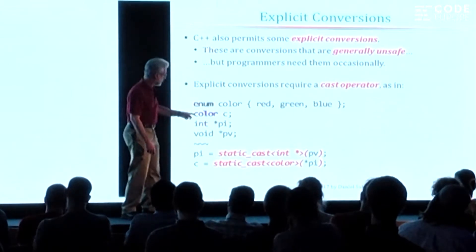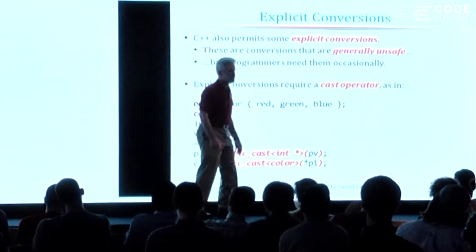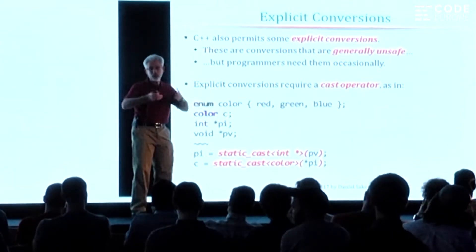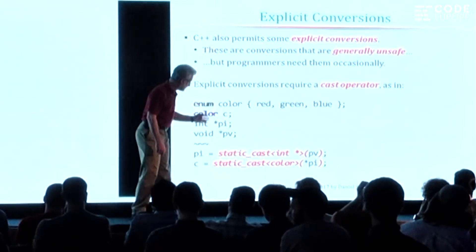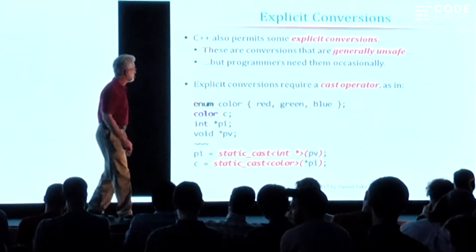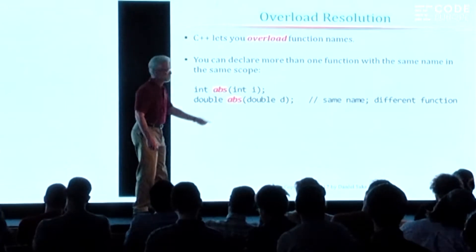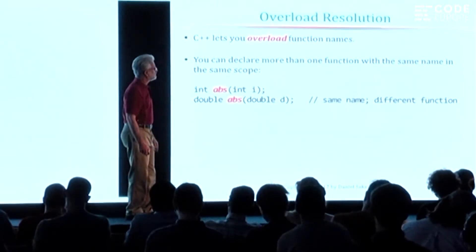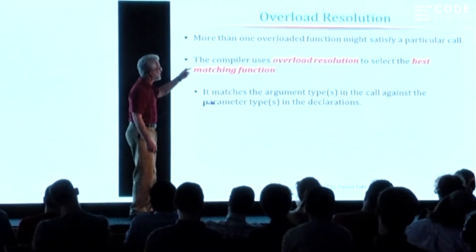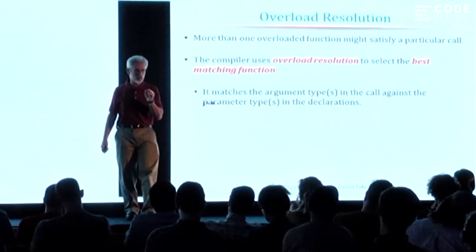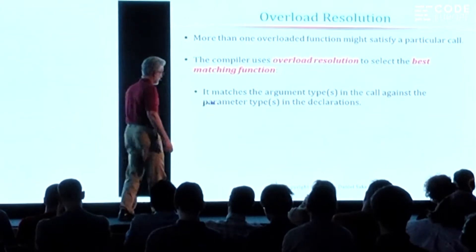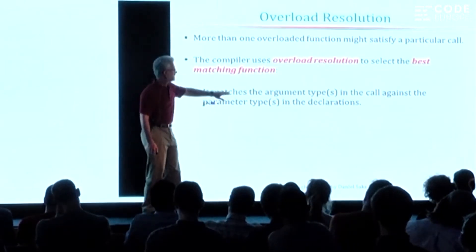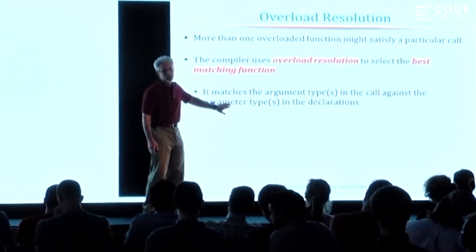Here's another one: converting an integer into an enumeration value. The enumerated type here only has three valid values — the underlying mapping represents them as 0, 1, and 2. But an integer could have a value well beyond that range. So when you convert an enumeration into an integer, you need to cast it. Now C++ lets you do function overloading, meaning you can have two functions with the same name but different parameter types. When you do function overloading, the compiler has to have a way of figuring out from a given call which one of the overloaded functions is being called — it does it by a process known as overload resolution.